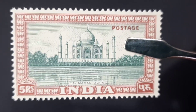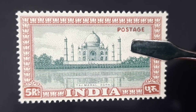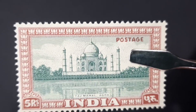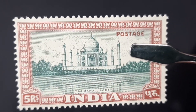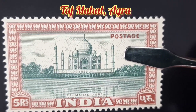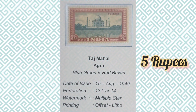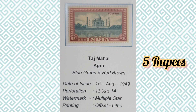The next stamp is the five rupees stamp. The image depicted in this stamp is the world-famous marble marvel, the Taj Mahal, commissioned by Emperor Shah Jahan in the year 1631 on the banks of the river Yamuna. Further philatelic information about this stamp is provided here.